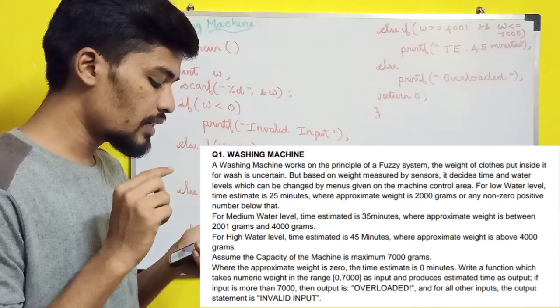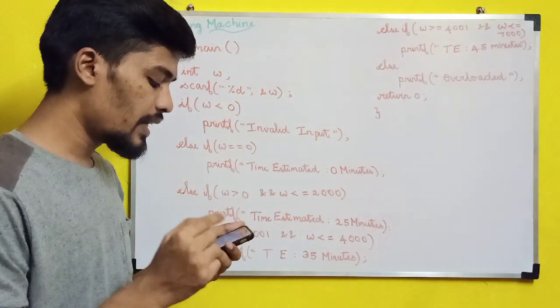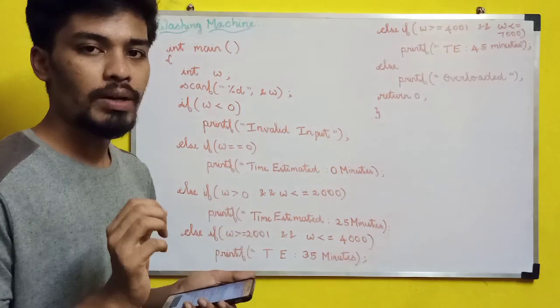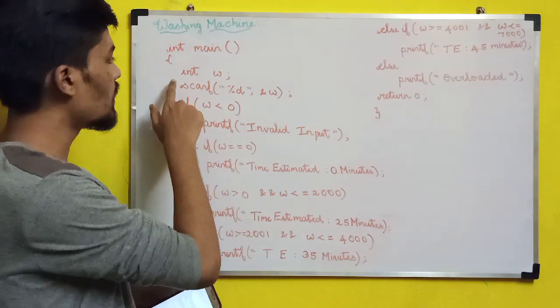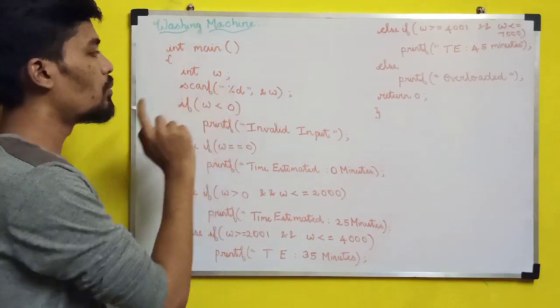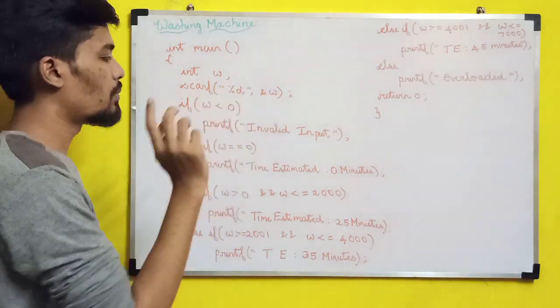So the first condition: when weight is 0, we print the estimated time as 0 minutes. First we declare an int variable w and use scanf to read w.